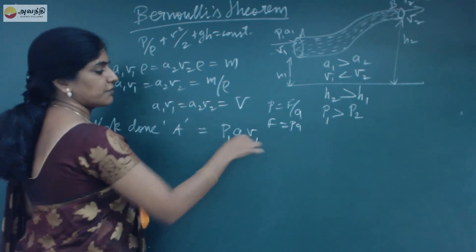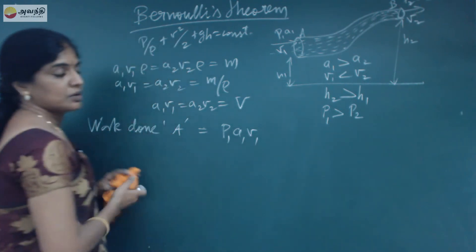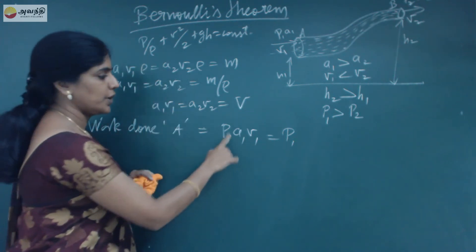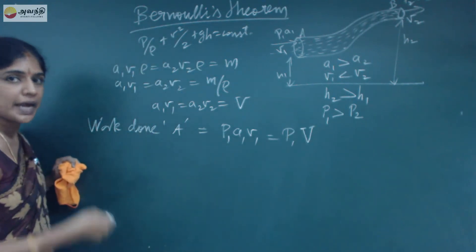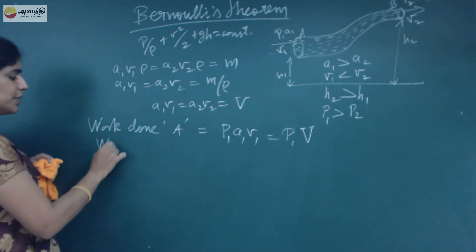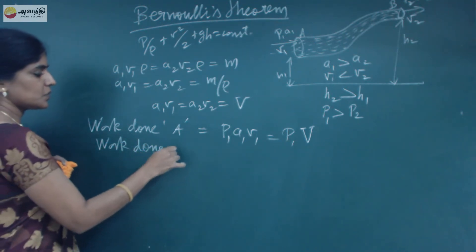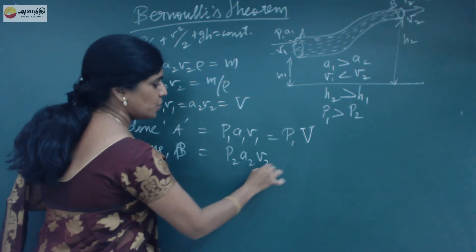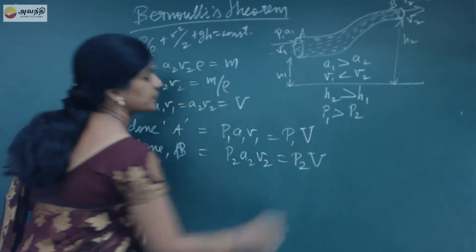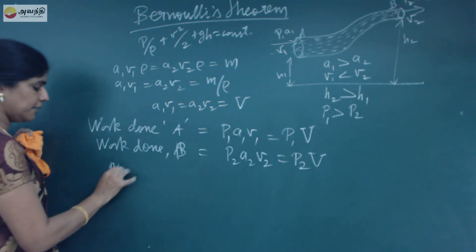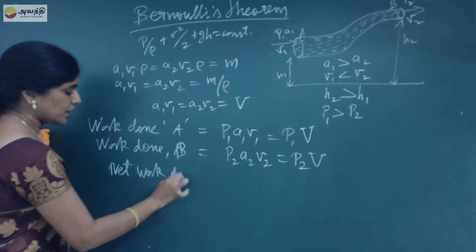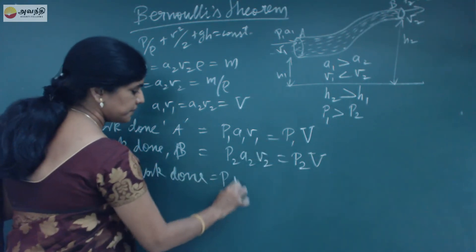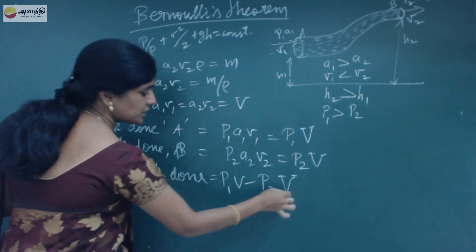Work done equals force times velocity, which is P1A1 times V1. This equals P1 times the volume of liquid entering — from the equation of continuity, A1V1 equals the volume. Similarly, work done at point B, where liquid is leaving, equals P2A2V2, which equals P2 times V (volume).